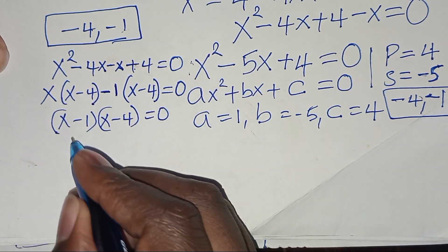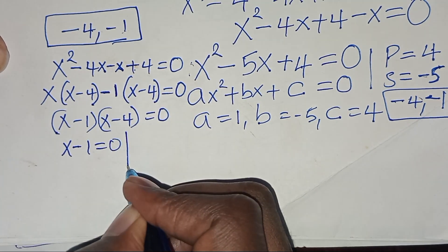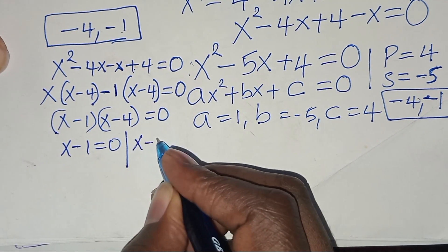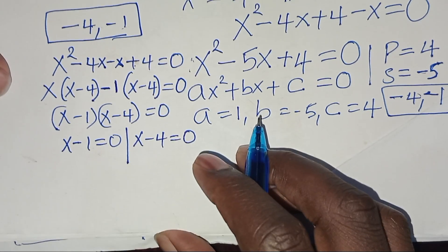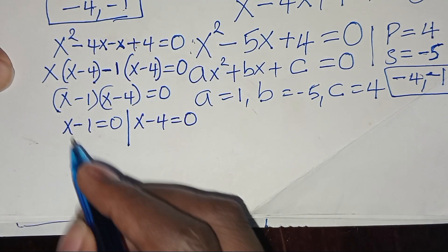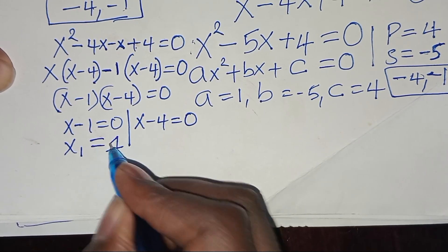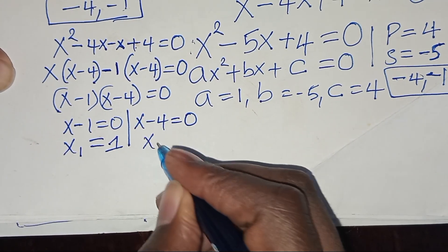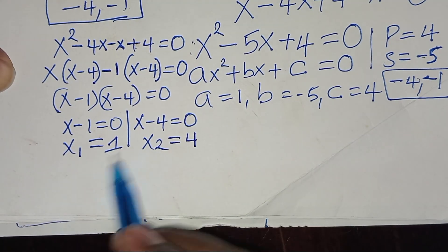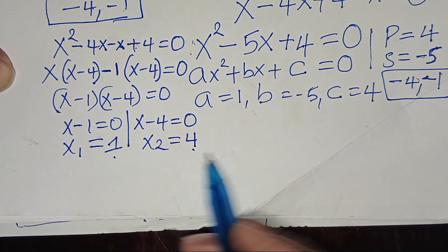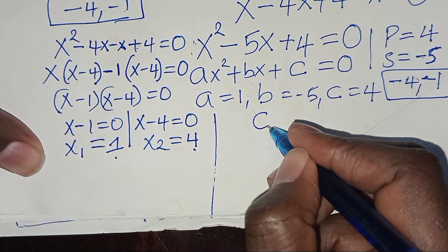Setting each factor to zero gives us two values of x: x minus 1 equals 0, so x₁ equals 1; and x minus 4 equals 0, so x₂ equals 4. We have two candidate solutions: 1 and 4. Let's verify both.